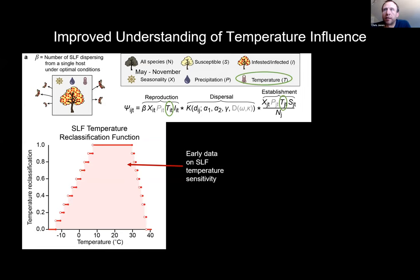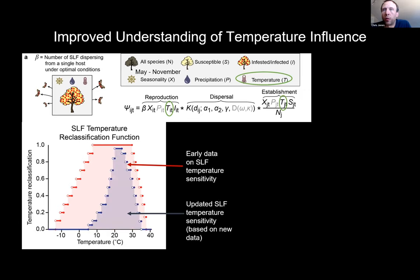The second change to the model is the influence of temperature. When we first started modeling spotted lanternfly, the only data on the effect of temperature on reproduction and survival were from small correlative studies out of Korea, and that's what we used. But in 2020, Krepp-Minidahl published SLF survival based on temperature tolerances. We used their study to update the temperature driver data for survival and reproduction in our model. This allows a comparison of how integrating that new information with our best set of parameters affects our forecast accuracy.